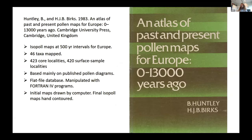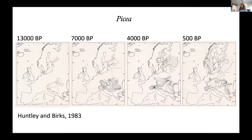Rashid also showed the impressive atlas put together by Brian Huntley and John Birks, with isopollen maps at 500-year intervals — very impressive even today — mapping 46 taxa using over 400 pollen diagrams and over 400 locations for surface samples. They used mainly published pollen data and diagrams, but already used computer programs to help assemble the data and make these initial maps, which they then colored in. This is an example for Picea, and these maps have not changed much compared to what we can make today.